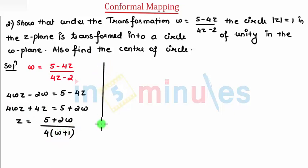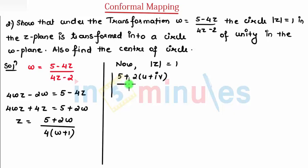Now students you know that we have mod of z equal to 1. So now I need mod of z. For that I need to substitute pi plus 2u plus iv divided by 4 times u plus iv plus 1. So now this will be equal to 1.